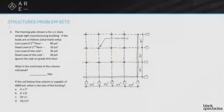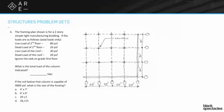Question number four, this one's going to take a little bit of calculation. The framing plan shown is for a two-story simple light manufacturing building. If the loads are as follows, axial loads only: